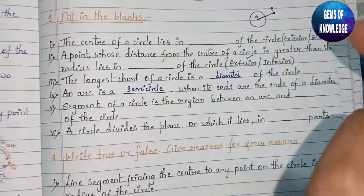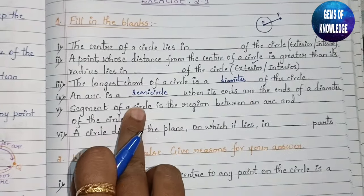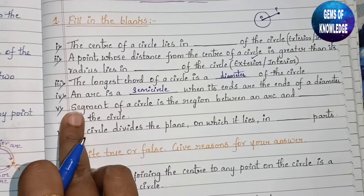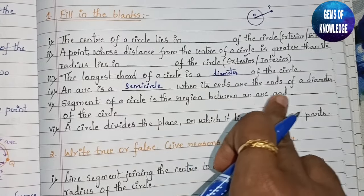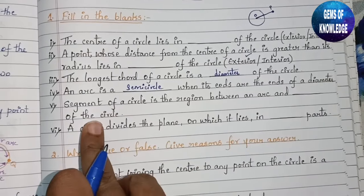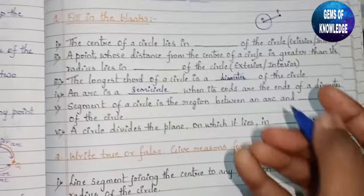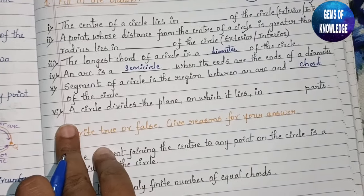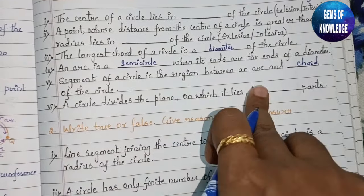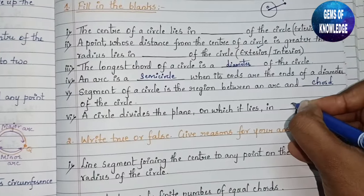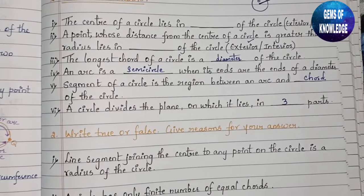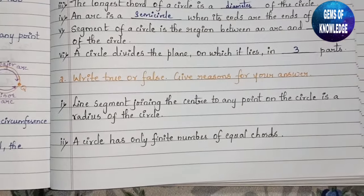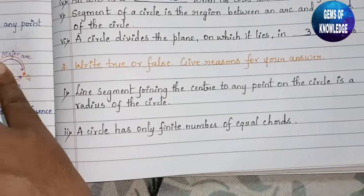So the arc is a semicircle. The segment of a circle is the region between an arc and the chord of the circle — so you must write 'chord of a circle.' A circle divides the plane on which it lies into three parts: interior, exterior, and the circle itself.